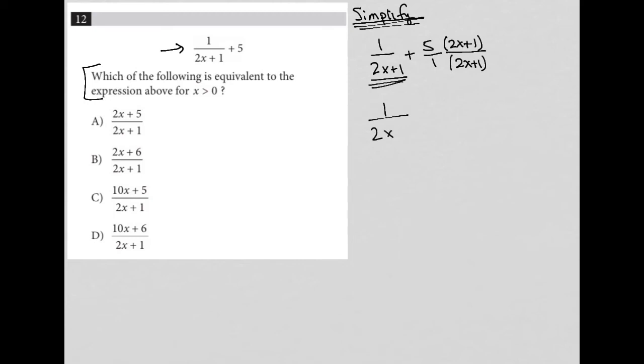By doing so, I end up with 1 over 2x plus 1 plus 10x plus 5 over 2x plus 1.